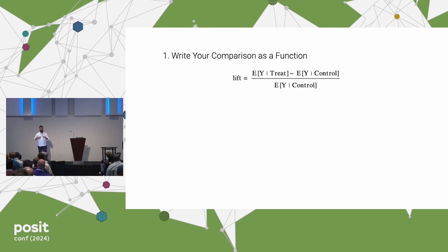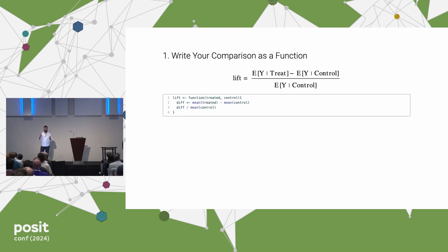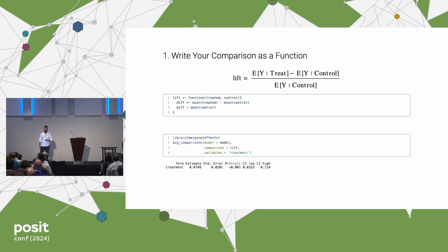I walked through the following steps. I said: can you write down what the lift is — don't worry about code, just pen and paper. And they wrote down something like this: the lift is the difference in conversion rates between treatment and control, divided by the conversion rate in control. I said, good start — can you write that as an R function? And they wrote: take the mean outcome in treatment, subtract the mean outcome in control, and divide by the mean outcome in control. That's all you need to get started using marginal effects. You use the average_comparisons function, which takes as its arguments the model you fit, the comparison you want to make, and the variable in your model for which you'd like to compute that comparison. Marginal effects is now reporting a lift of 7.5% — treatment did better — along with standard errors, p-value, and confidence interval.